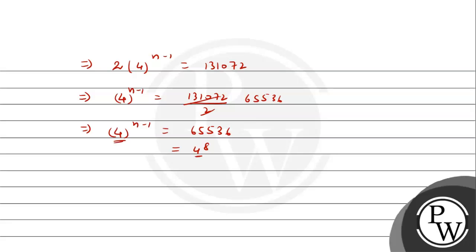Since both sides have the same base, we can equate the exponents: n−1 = 8, which means n = 9. Therefore, the 9th term of the GP is 131,072. Hope you understood it well — best of luck!